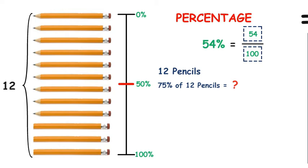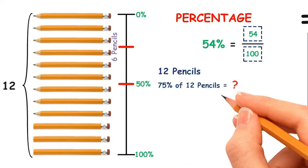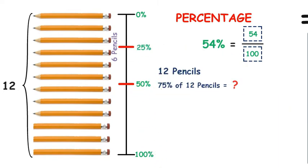Yes, 50% of pencils equals 6. Now, what would be 25%? 3. 25% of 12 pencils equals 3. Now you can easily find out the answer of 75% of 12 pencils.